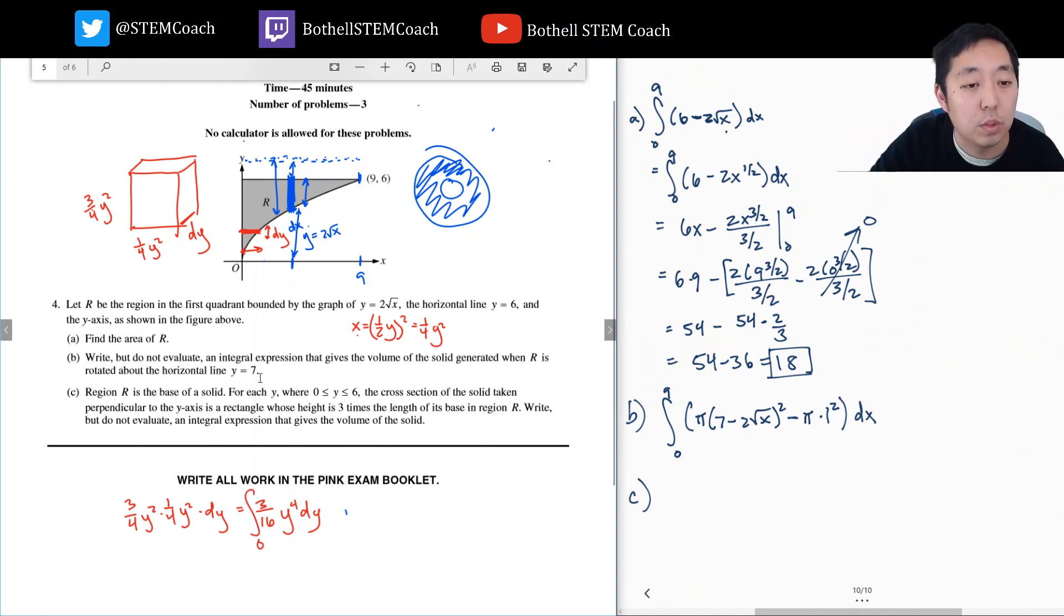From zero to y equals six, because I'm integrating over y. And that does that one. Yeah, that was it.